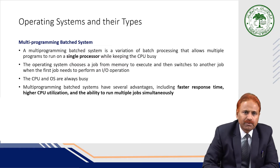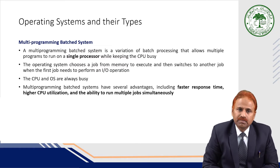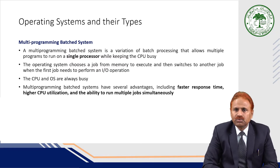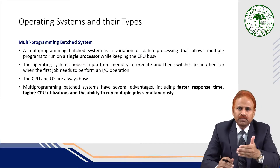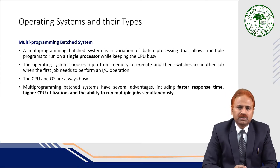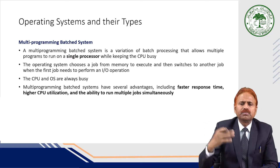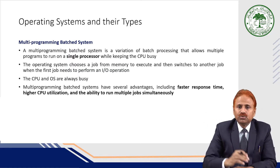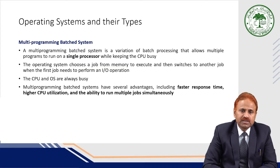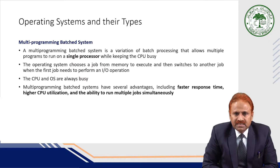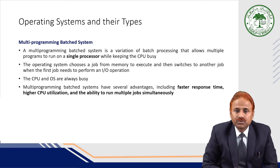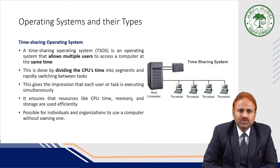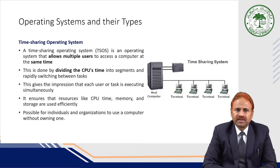Another type is the multi-programming batched system. A multi-programming batch system is a variation of batch processing that allows multiple programs to run on a single processor while keeping the CPU busy. The operating system chooses a job from memory to execute and then switches to another job when the first job needs to perform some input/output operation. During that IO operation, the CPU takes another job and executes it, making optimal use of the CPU. Advantages include faster response time, higher CPU utilization, and the ability to run multiple jobs simultaneously.